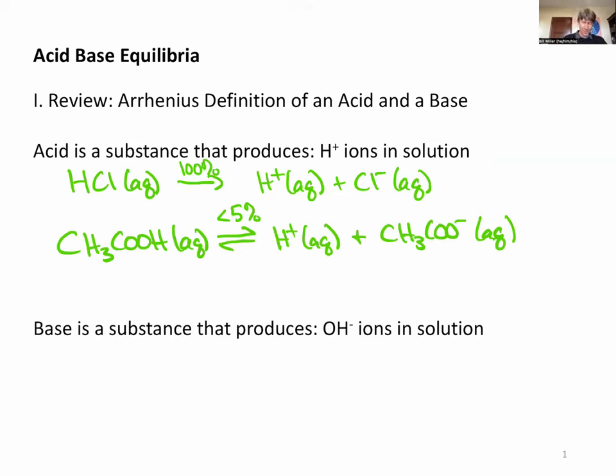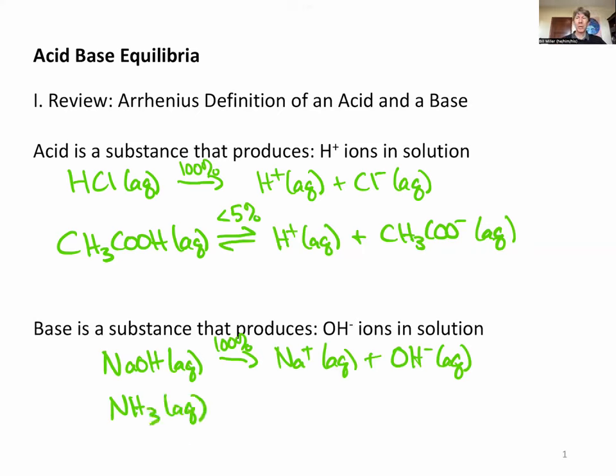A base is a substance that produces hydroxide ions, and we had sodium hydroxide, NaOH, which broke down 100% because it was a strong base into sodium ions plus hydroxide ions. We also talked about ammonia, NH3, which was a weak base. Ammonia is where the Arrhenius definition of a base breaks down, so we're going to talk next about a broader definition of acid and base, and that's going to be the Bronsted-Lowry definition.